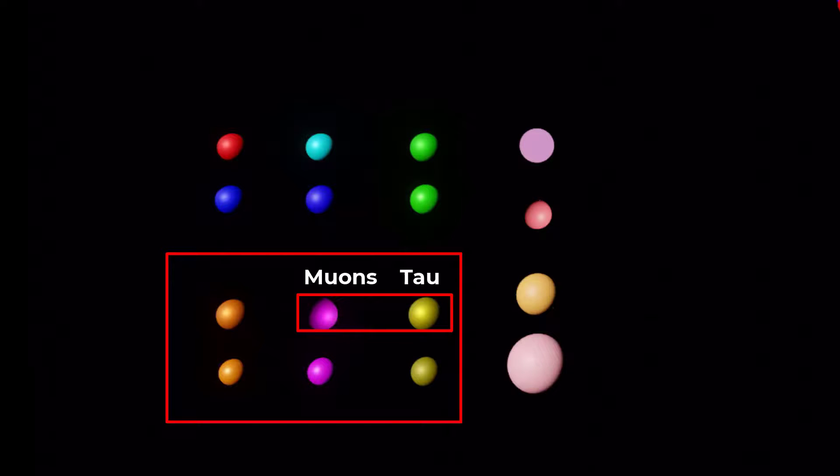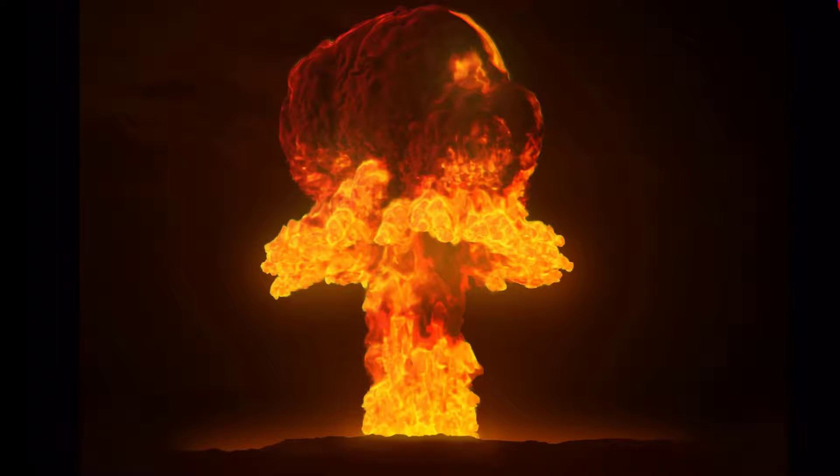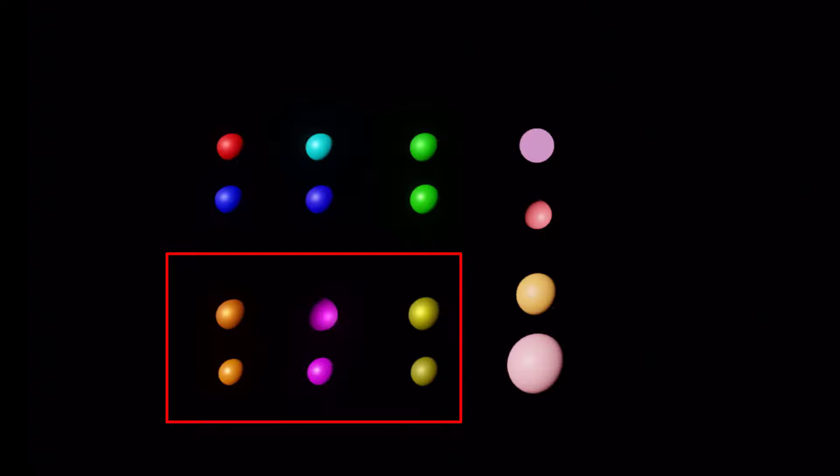Muons and tau particles are typically produced in high-energy processes, particle accelerators, and certain radioactive decays. Each of these types has a negative charge and a distinct mass.